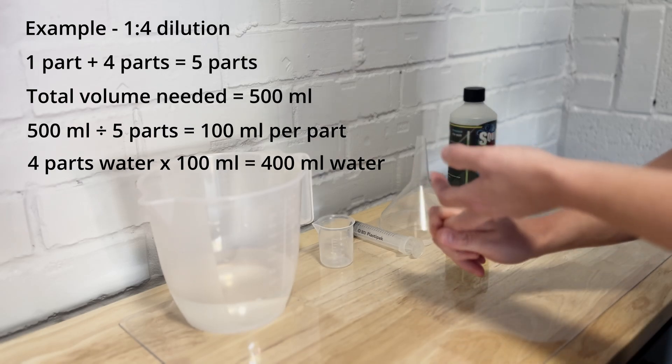So again in ounces exactly the same, each of those parts is 3.2. So if you're going to times that up by 4 you are going to get 12.8 ounces of water.